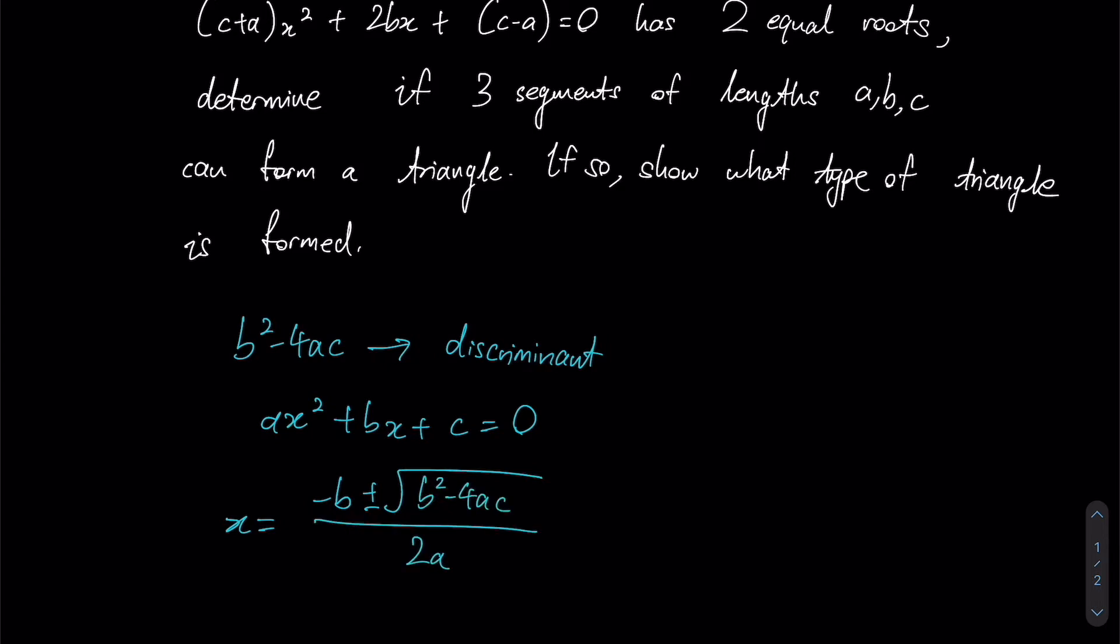The reason that for most quadratic equations we have two different roots is due to this expression over here. If this expression is a positive number greater than zero, then that will give rise to two separate values due to the plus-minus sign outside of the square root.